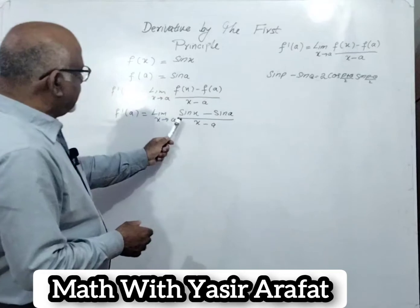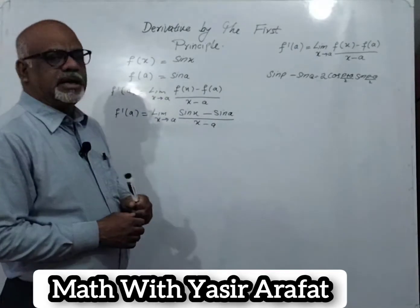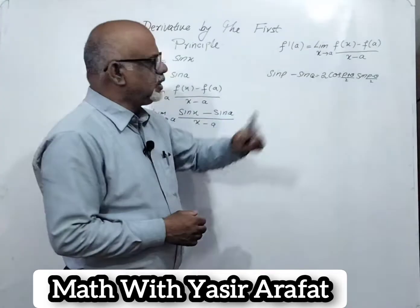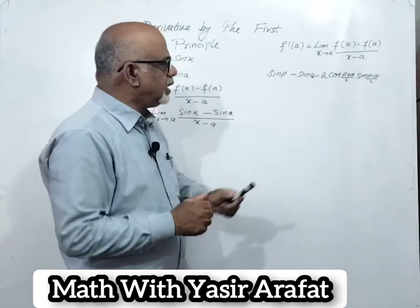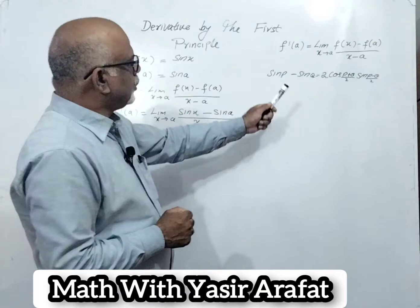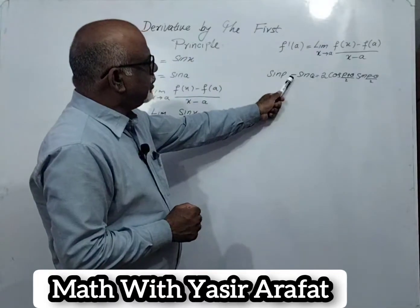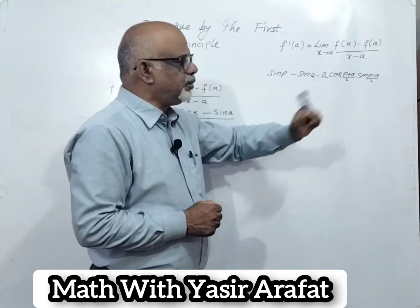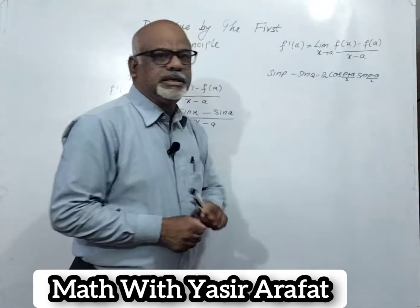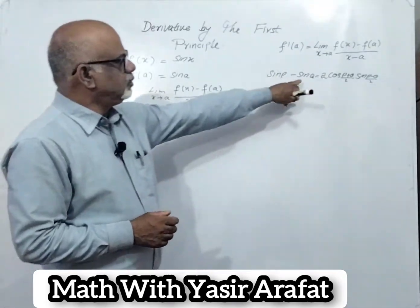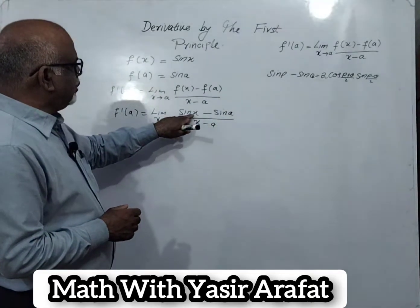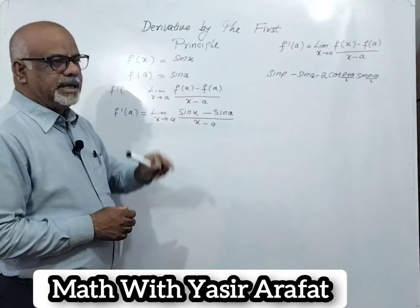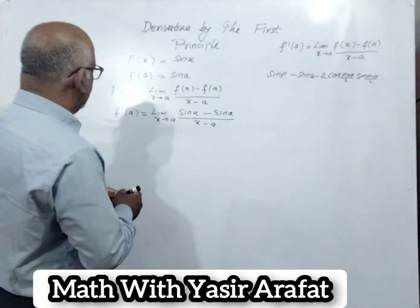In the numerator, this is sin x minus sin a. We have the formula: sin p minus sin q, where p and q are angles of the function. The formula is: sin p minus sin q equals 2 cos((p plus q)/2) times sin((p minus q)/2). We have to use this formula here, where the value of p is x and the value of q is a.